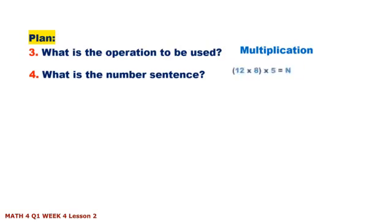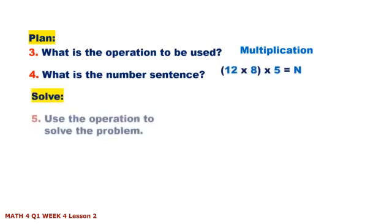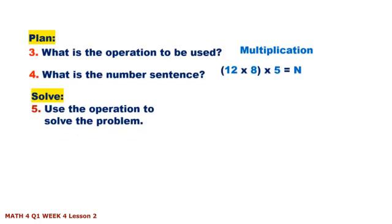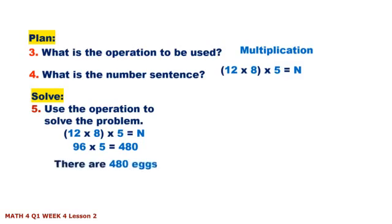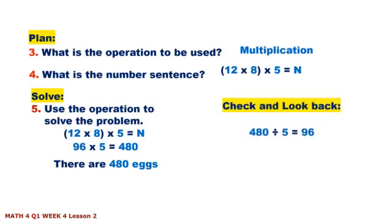What is the number sentence? Solve: 12 × 8 = 96, then 96 × 5 = 480. There are 480 eggs. Check and look back: 480 ÷ 5 = 96, and 96 ÷ 8 = 12.